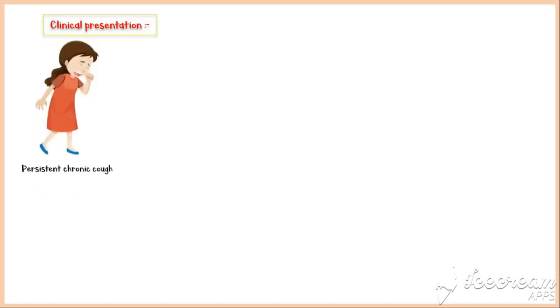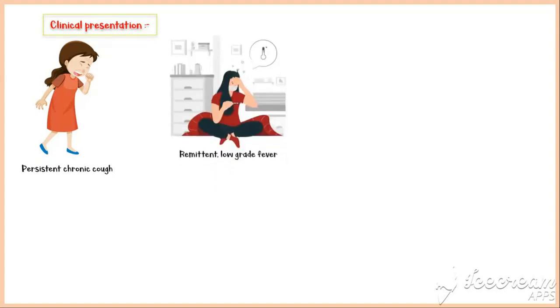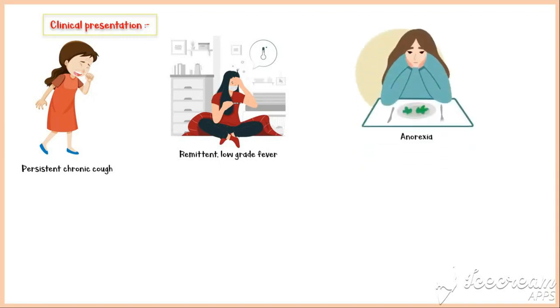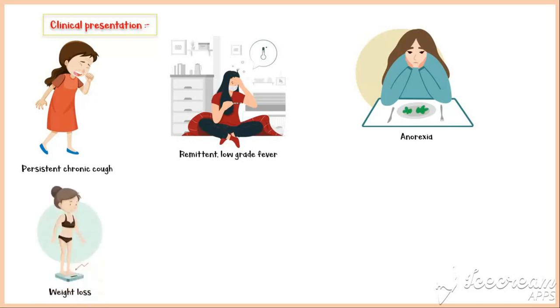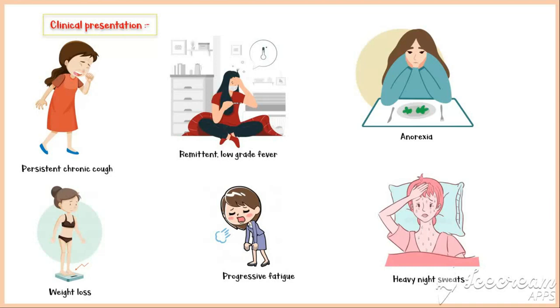Now let's discuss the clinical presentation of tuberculosis. Persistent, chronic cough is the predominant symptom in tuberculosis patients. They have a remittent, low-grade fever, which appears late in the afternoon and fades out by night. Patients develop anorexia due to the inhibitory effects of cytokines on the hypothalamus, and long-term anorexia causes loss of weight over time. They also develop progressive fatigue due to reduced oxygen uptake by the lungs, and patients experience heavy night sweats.